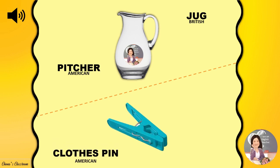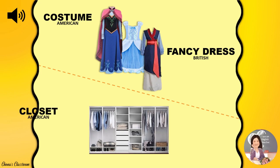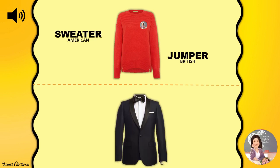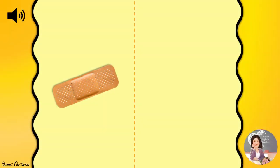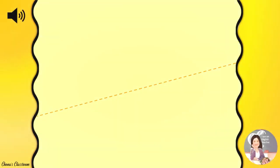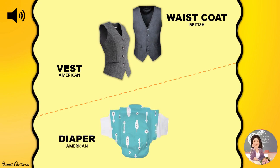Clothes pin / Clothes peg. Costume / Fancy dress. Closet / Wardrobe. Sweater / Jumper. Tuxedo / Suit. Band-aid / Plaster. Pants / Trousers. Vest / Waistcoat. Diaper / Nappy.